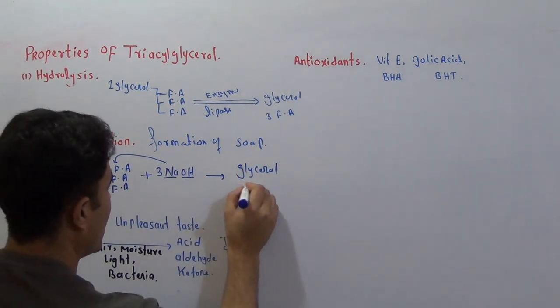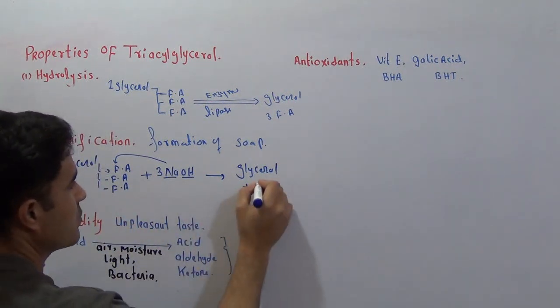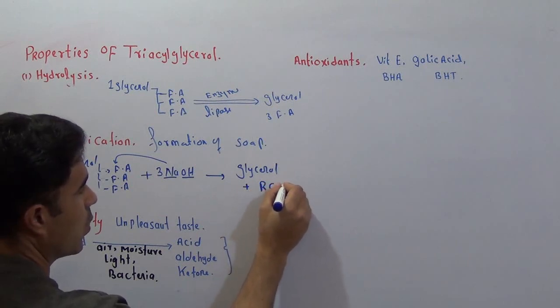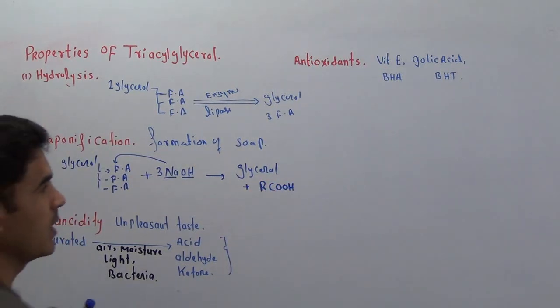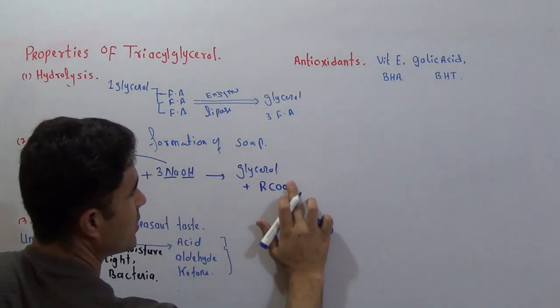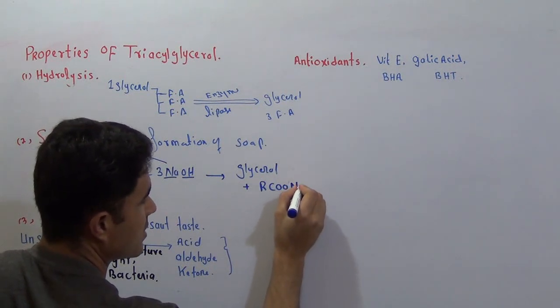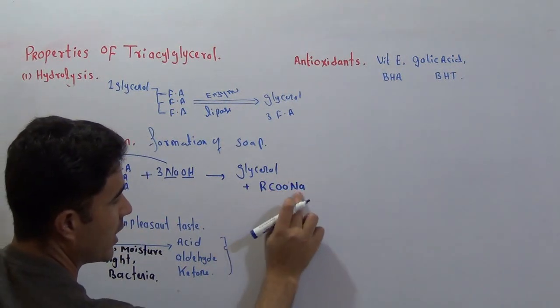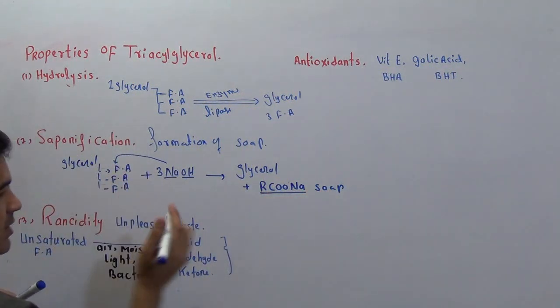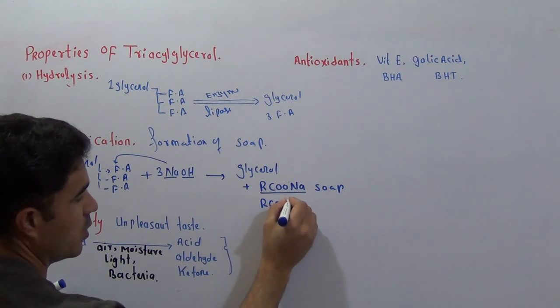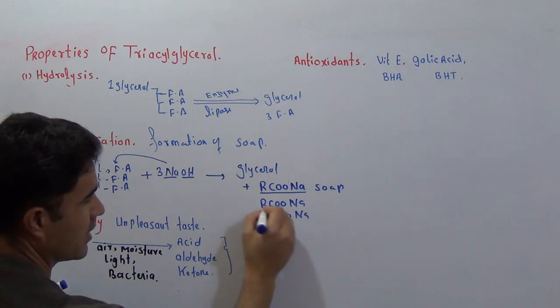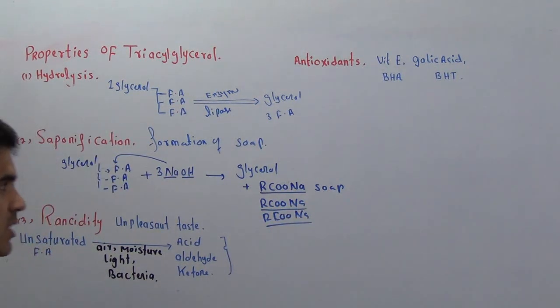Glycerol is now free, and we have three fatty acids. We write fatty acid as RCOOH. When three sodium are attached, we write RCOONa - this is called soap. Similarly we have another fatty acid, RCOONa and RCOONa. Three soap molecules are produced. This process is called saponification.